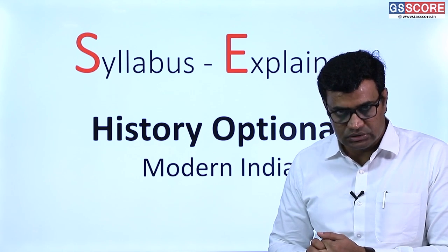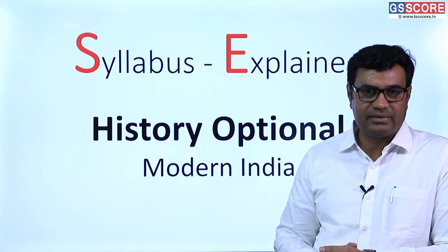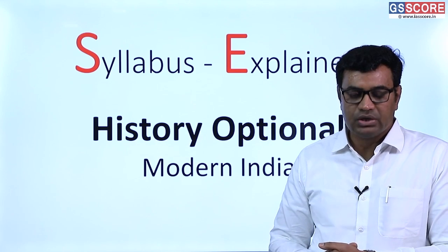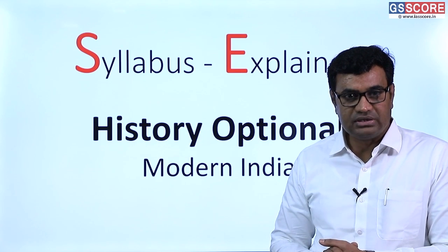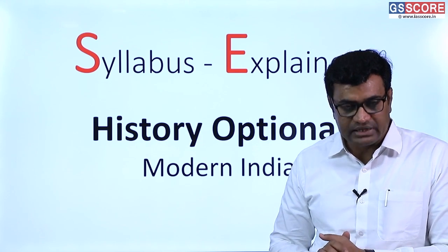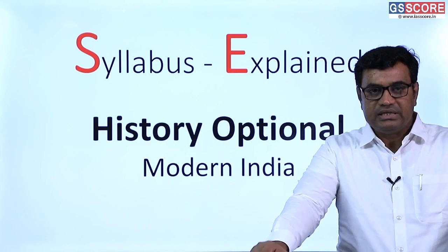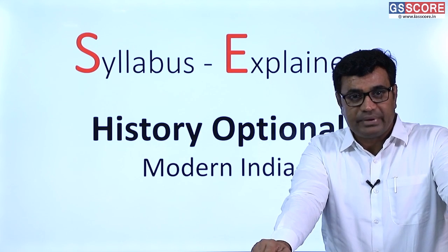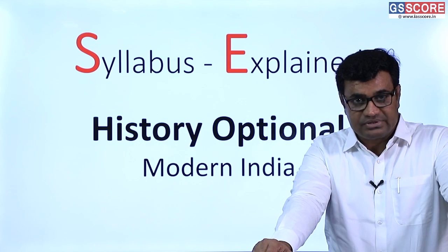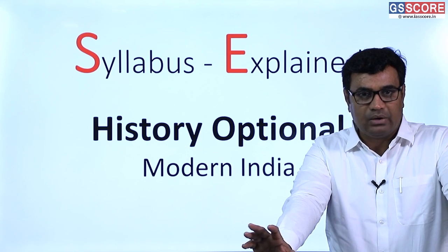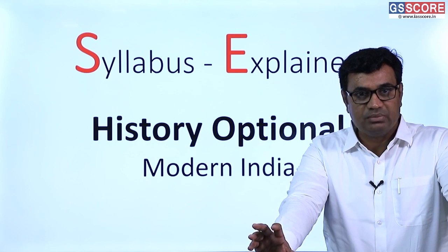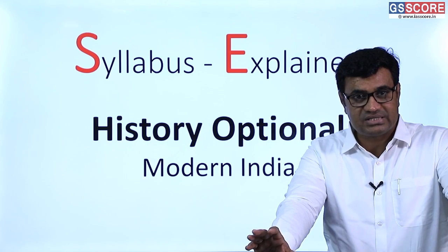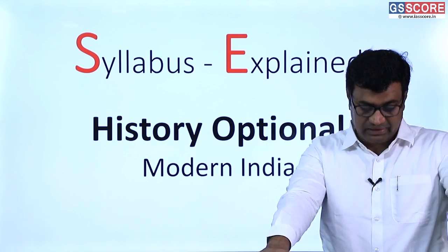Today we'll start with the syllabus explanation of Paper 2 of History Optional of UPSC Mains examination. In the previous two videos I have explained the syllabus of Paper 1, including ancient and medieval Indian history. Today we'll start with Paper 2. The first section is Modern India. Modern India starts with the arrival of European companies to India, and these European companies began to fight among themselves and also with Indian powers, and ultimately British emerged to be victorious, ruling till the middle of the 20th century.